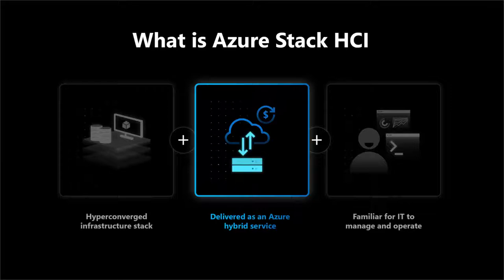Q: Will there be more than two sites supported? A: In the first version of Azure Stack HCI, the requirement is exactly one or two sites. If you have two sites, you need the same number of nodes on each side — two and two, three and three, etc. We would love to hear feedback about scenarios requiring more than two sites or asymmetric node counts. We're starting with the simplest case but are very open to adding more advanced configurations if there's genuine customer need.